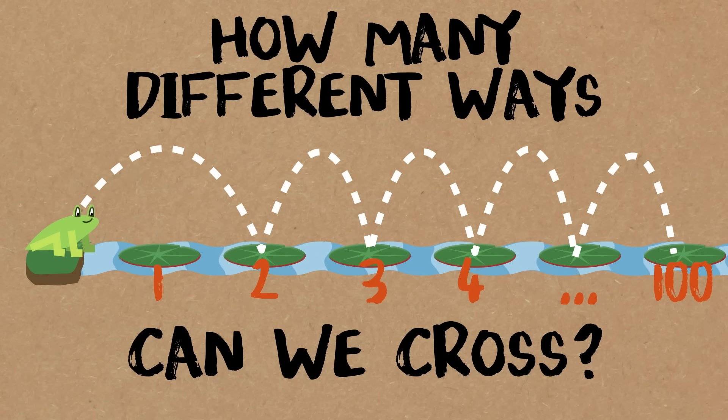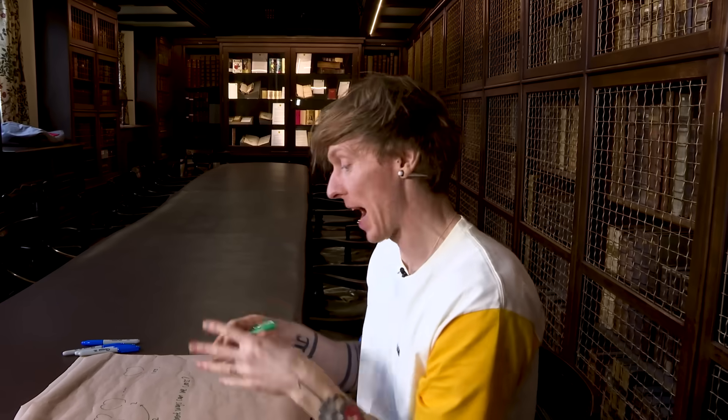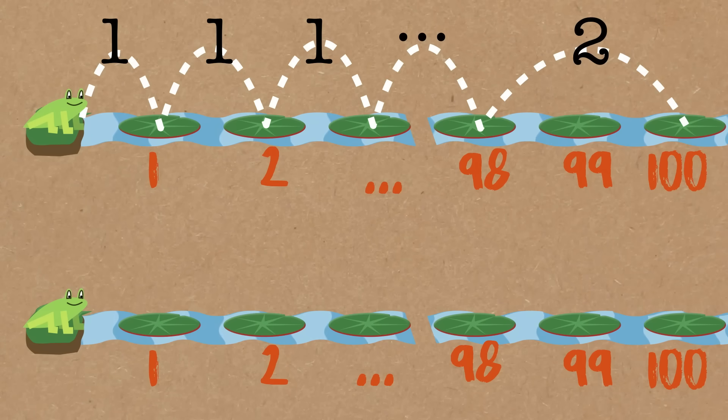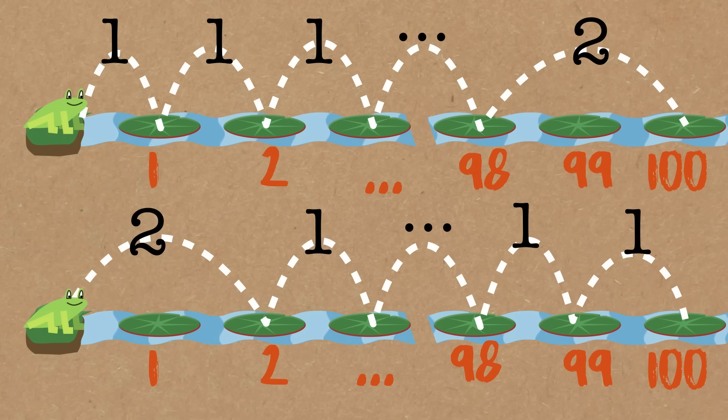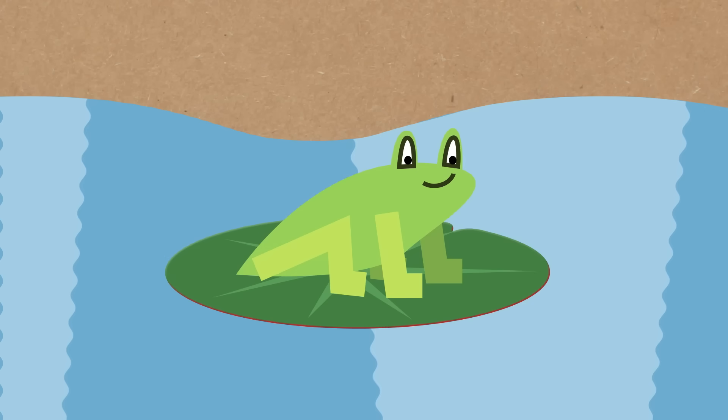We're intelligent frogs and we want to think about how many different ways there are for us to get there, because we can jump one space or we can put more effort in and use these muscly back legs and jump two. There's no other options. The order matters, and there are all sorts of random combinations. The hundred here is pretty arbitrary, but it's a big enough number. You probably don't want to write down all of those possible ways of combining ones and twos. So we want to think about it in a cleverer way.